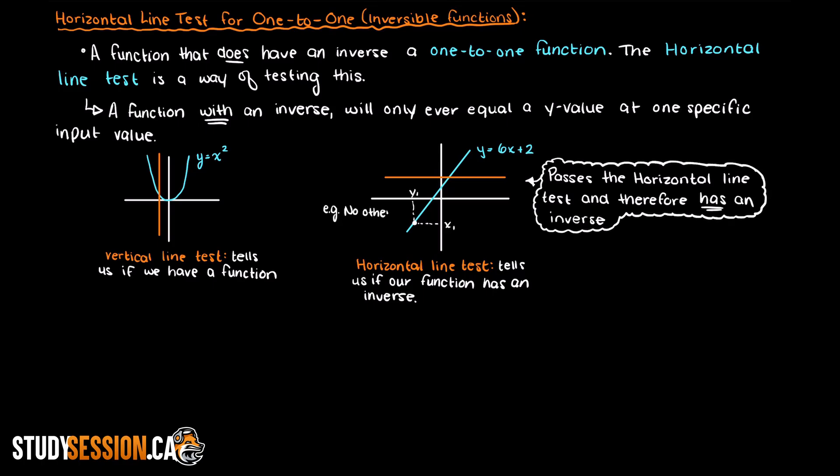So we know that this is a one-to-one function, as every input will only ever map to one output, and vice versa is true. Every output on this function will only ever equal a single input.